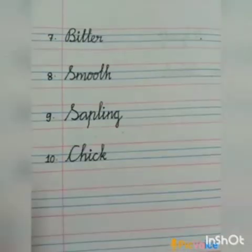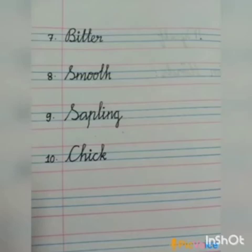Tenth and last dictation word is Chick. Chick means a baby chicken — the small bird that hatches from an egg. Spell: C-H-I-C-K. Chick.